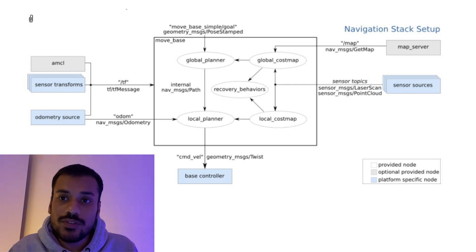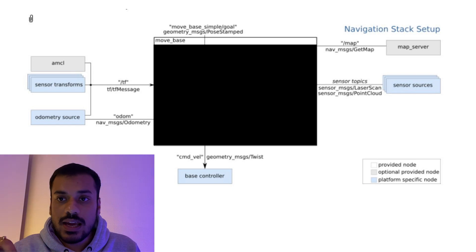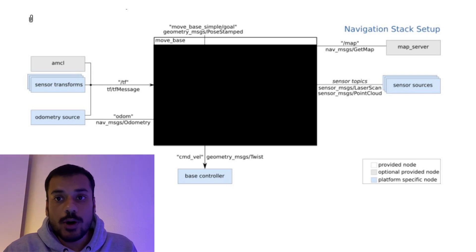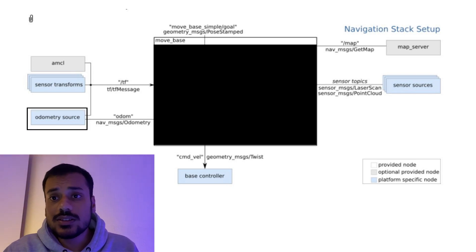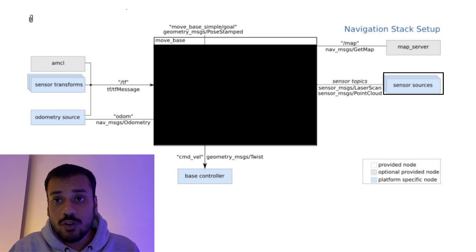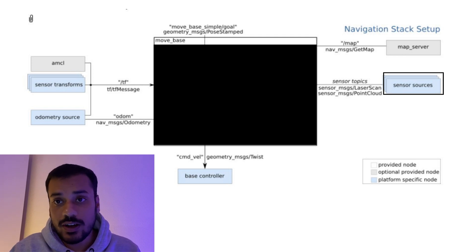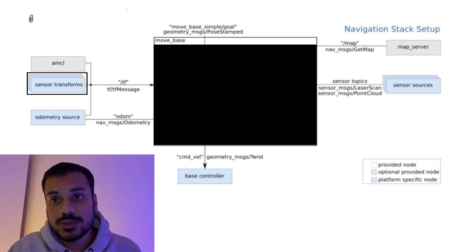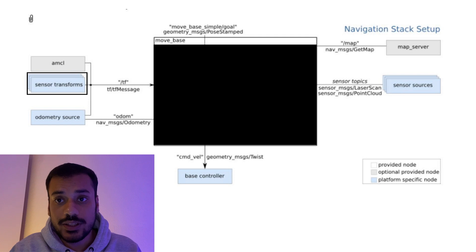Instead of directly talking about MoveBase, let's say it is a black box for a minute and talk about everything it needs for navigation to actually happen. It needs six things — four compulsory and two optional. First, the odometry source: MoveBase needs odometry information using message type nav_messages/odometry. Second, sensor sources: MoveBase needs laser scan or point cloud information about the environment so its global and local planners can plan paths around obstacles. Third, sensor transforms: MoveBase needs publishing of transforms between different coordinates, including map to odometry and odometry to base link.